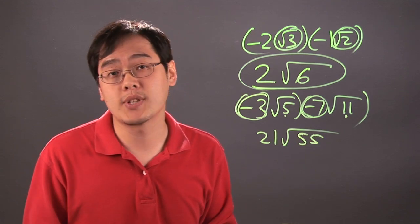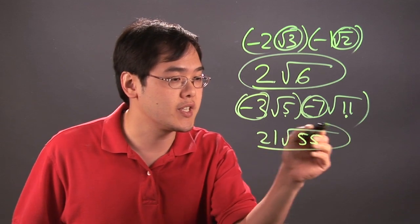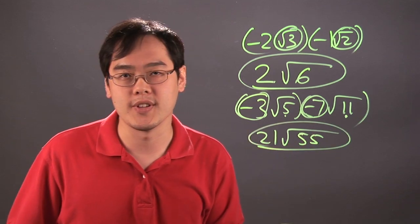Some square roots can, some square roots can't, it all depends on what the radical is. But in this case, 55 is as good as it gets, so the final result is 21 square root of 55.